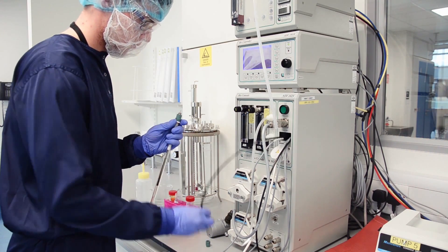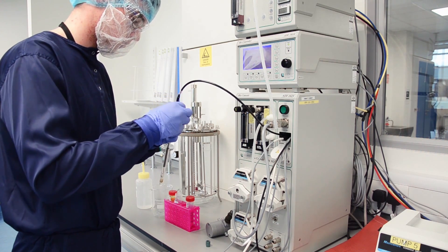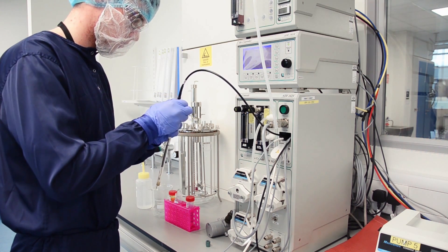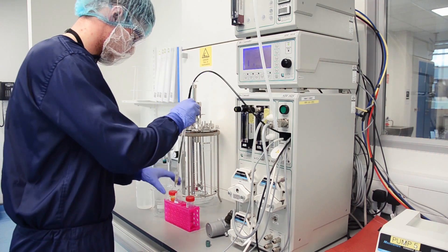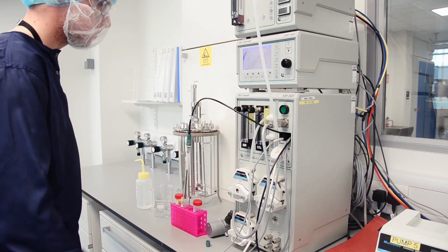A pH probe measures the hydrogen ion concentration of a solution. The cap is first removed from the probe. The connection to the controller box is attached and the screen is set to the calibration setting.